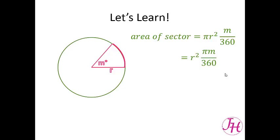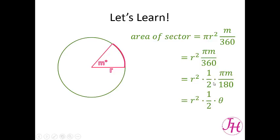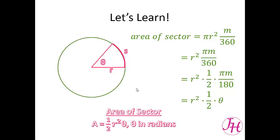We can rearrange this as r² times πm over 360. To convert from degrees to radians we multiply by π over 180. If we pull out one half, then we get our π over 180 that we want. The angle measure in radians becomes θ, so our formula becomes r² times one half times θ. Typically, we write the area of a sector as one half r²θ, where θ is in radians, keeping the one half as the coefficient.